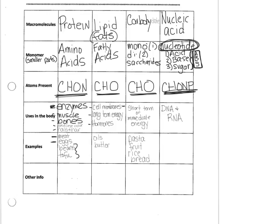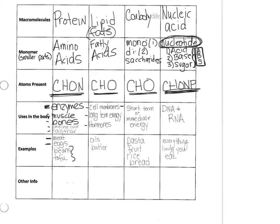For carbohydrates, pasta, rice, and bread are familiar examples. What you might not realize is that fruits are also a source of immediate or short-term energy — they're made up of mono and disaccharides, so fruit is also a carbohydrate. For nucleic acids, since they're found in DNA and RNA, everything you eat that was living contains nucleic acids. Eggs, chicken, broccoli, and raw fruits and vegetables all have cells with DNA and RNA, and therefore contain nucleic acids.